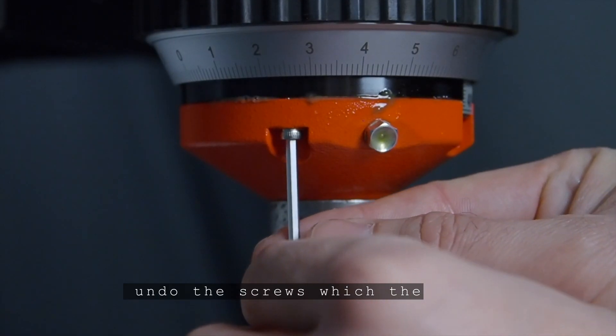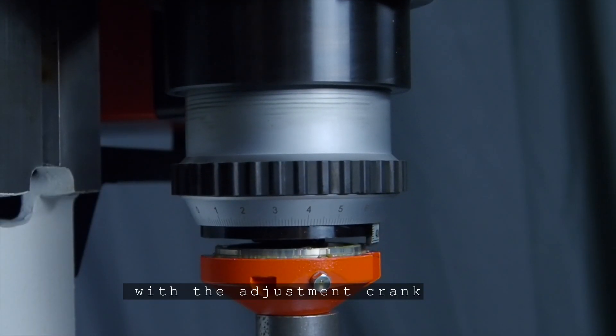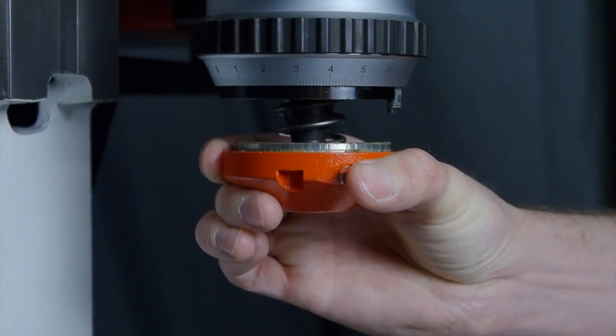Undo the screws with which the cap is fastened. Move the riveting unit back up with the adjustment crank. The cap and the pressure spring will remain lying on the spacer.